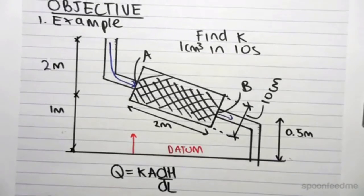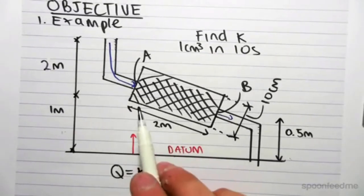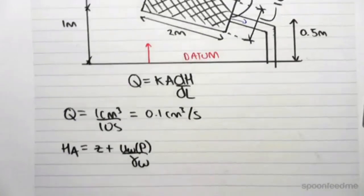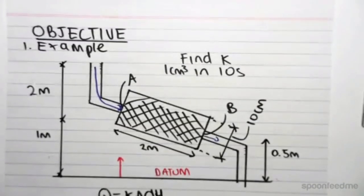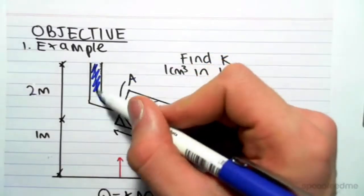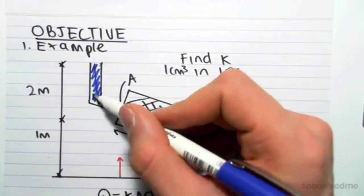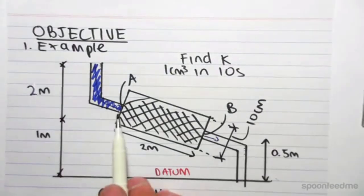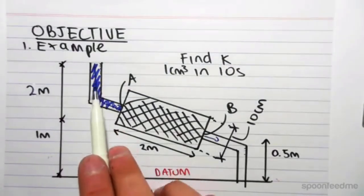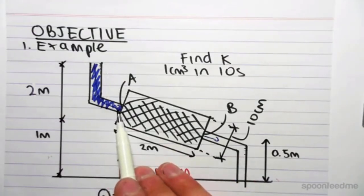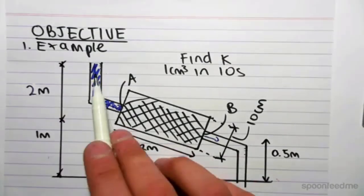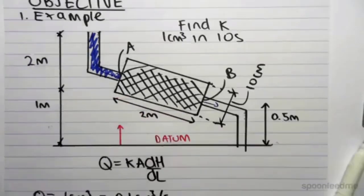So the head at A, it's 1 m above the datum. So z is 1 plus... Now because this would be constant flow, so this would all be filled with water, we actually develop a pressure of water at A due to the hydrostatic pressure. So because we're 2 m below the surface at A, there's a pressure buildup of water.